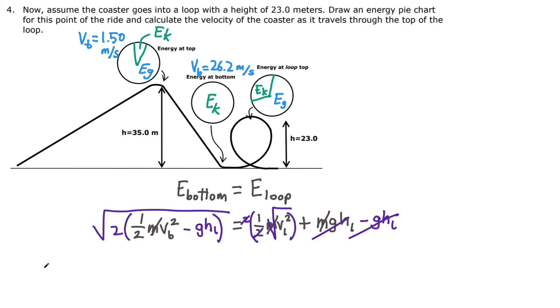Plugging in my known values, I get the following. This was the velocity at the bottom of the hill—remember that term is squared. And I subtract the value of g, 9.80 meters per second squared, times the height. Remember, that came from the loop side of the equation; that's the height of the loop, 23 meters.